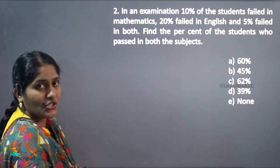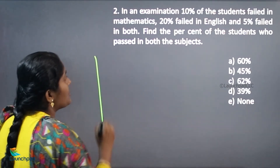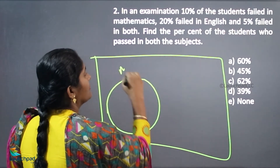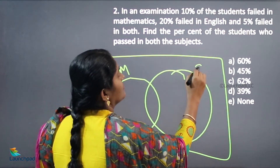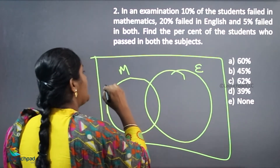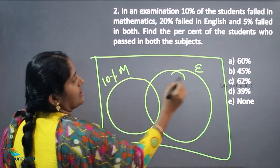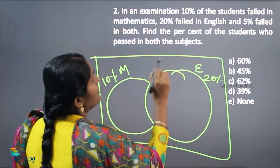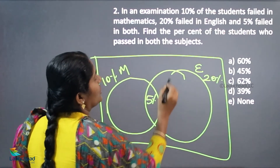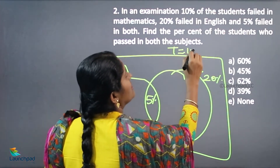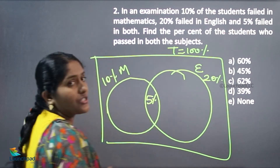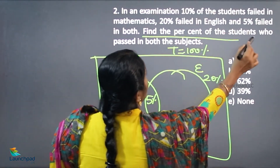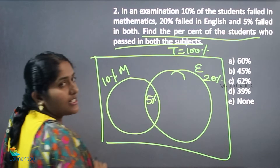In an examination, 10 percentage of the students failed in maths, 20 percentage failed in English, and 5 percentage failed in both. The total number of students is 100 percentage. Find the percentage of students who passed in both the subjects.